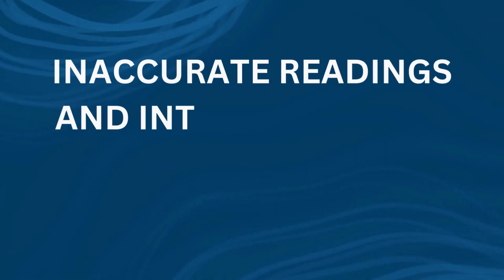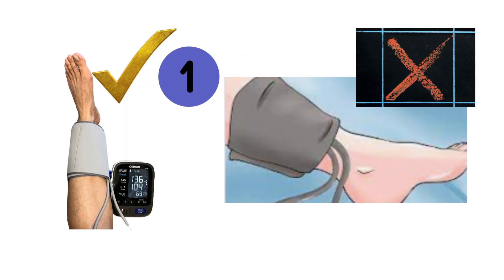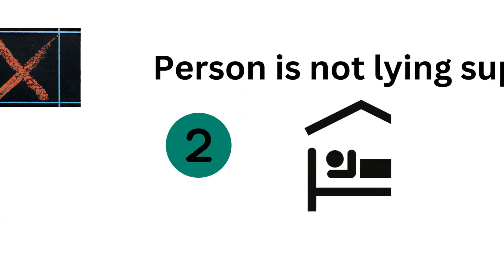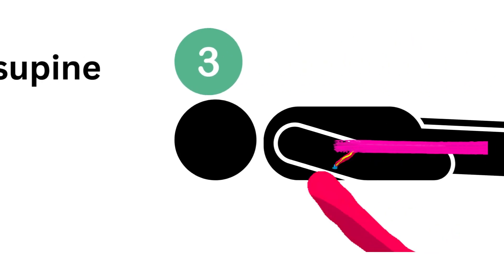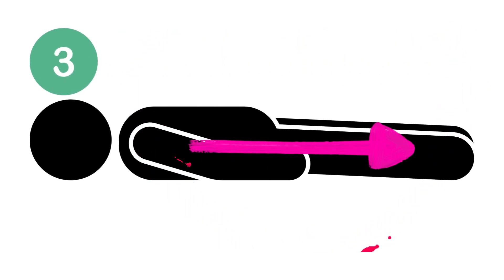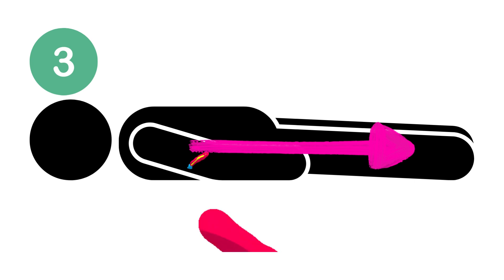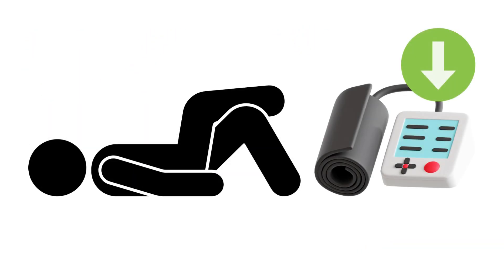Inaccurate readings and interpretations can be made in the following instances. 1. The direction of the tubing of the blood pressure monitor is not toward the head. 2. The person is not lying supine. 3. For accurate pressure measurement, it is important to position the lower limb at the level of the heart. If the leg is raised above the heart level, blood pressure may be underestimated, and vice versa.